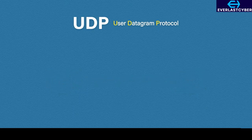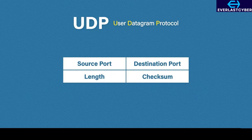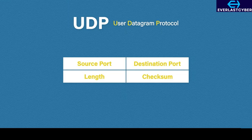Now let's look at a UDP header. As you can see, there is a lot less information here than on the TCP header. We only have the port numbers, the length of the data, and a checksum. The small header means less information but it is lighter and quicker — perfect for real-time traffic.